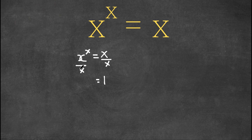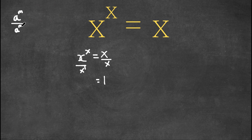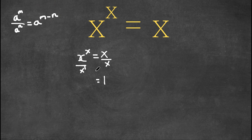Now on the left-hand side, we have x to the power of x divided by x, and x in the denominator can be written as x to the power of 1. Recall the important property of exponents: a to the power of m over a to the power of n equals a to the power of m minus n. So here, we have x to the power of x divided by x to the power of 1, giving us x to the power of x minus 1.